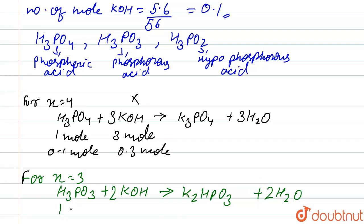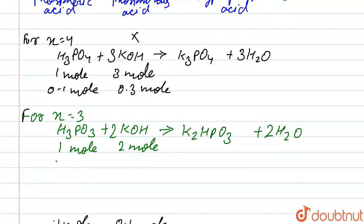Which means 1 mole of H3PO3 required 2 moles of KOH to completely neutralize. That means 0.1 mole required 0.2 mole of KOH. But in our question, 0.1 mole of H3PO3 required 0.1 mole of KOH. So it also does not fulfill our requirement.